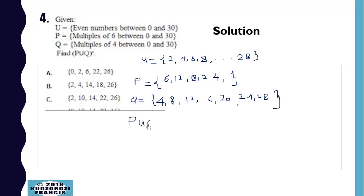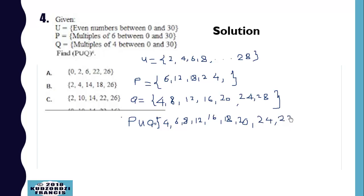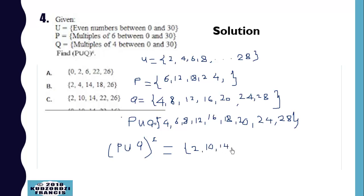P union Q equals {4, 6, 8, 12, 16, 18, 20, 24, 28}. The complement of P union Q will be equal to {2, 10, 14, 22, 26}.